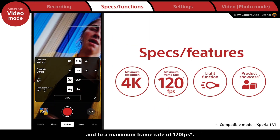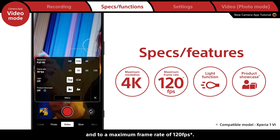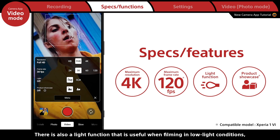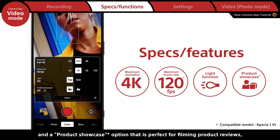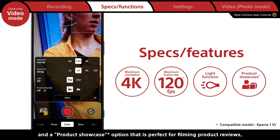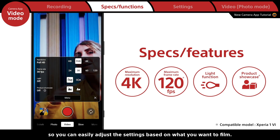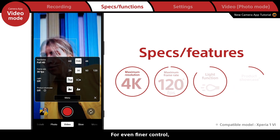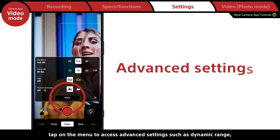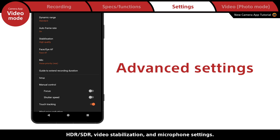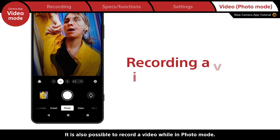Videos can be set to a maximum frame rate of 120 fps. There is also a light function that is useful when filming in low-light conditions, and a product showcase option that is perfect for filming product reviews, so you can easily adjust the settings based on what you want to film. For even finer control, tap on the menu to access advanced settings such as dynamic range, HDR and SDR, video stabilization, and microphone settings.